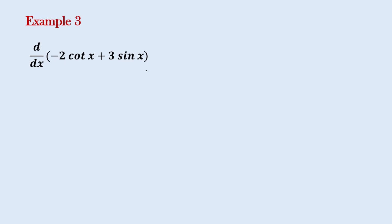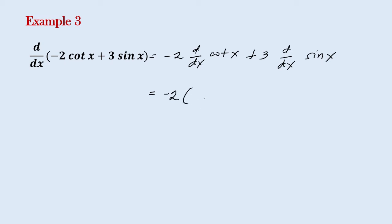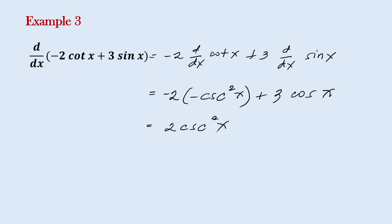Let's say we have the derivative of negative 2 cotangent of x plus 3 sine of x. We can have this as negative 2 times the derivative of cotangent of x, plus 3 times the derivative of sine x. The derivative of cotangent of x is negative cosecant squared x, and the derivative of sine x is cosine x. So simplifying, negative 2 times negative cosecant squared x is positive 2 cosecant squared x, plus 3 cosine x.